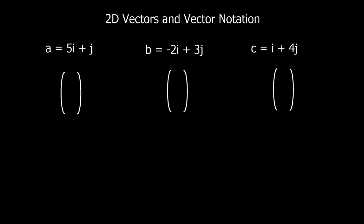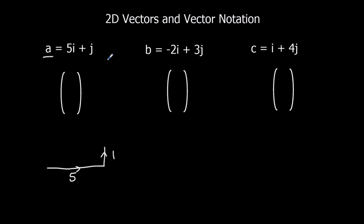In this video, we're going to look at 2D vectors with vector notation. So here we've got three vectors. We've got A, which is 5i plus j. 5i means a movement of 5 in the x direction, and j means up 1 in the y direction. So i is a movement in the x direction, j is a movement in the y direction. And we can write it as a column vector: 5 on top, 1 on the bottom — the change in x on top, the change in y on the bottom.